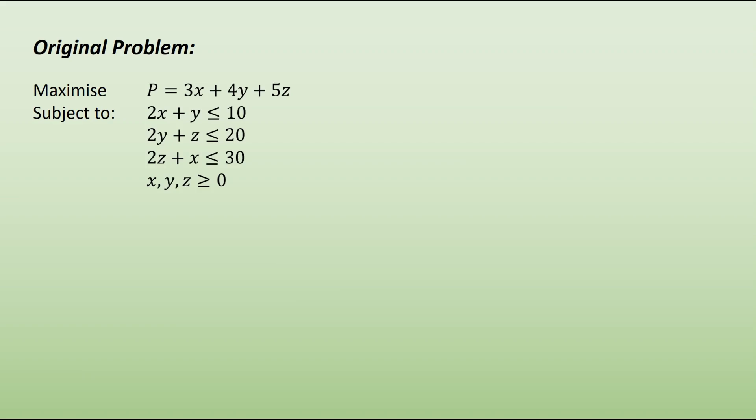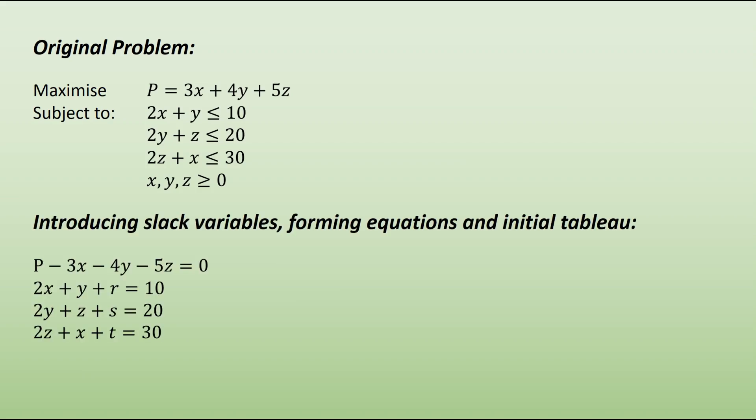In order to work with a maximizing problem, we do need to introduce some slack variables and form our objective equation. Here are our new equations including slack variables. Notice that I have rearranged the original objective expression so that it is equal to zero, and I have introduced slack variables so that we have equals to the value rather than less than or equals to.